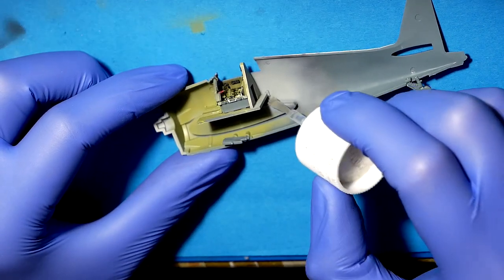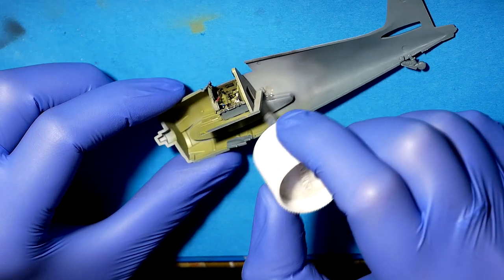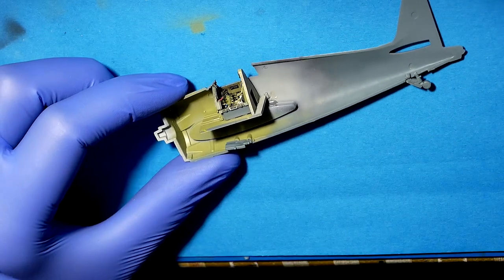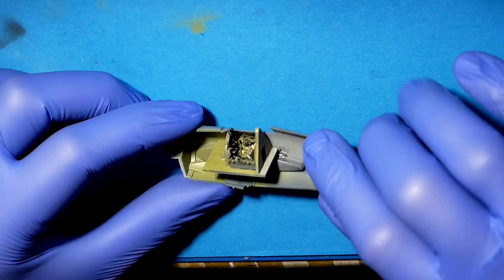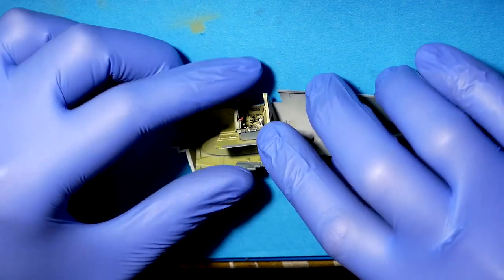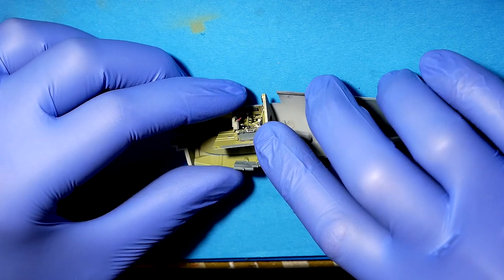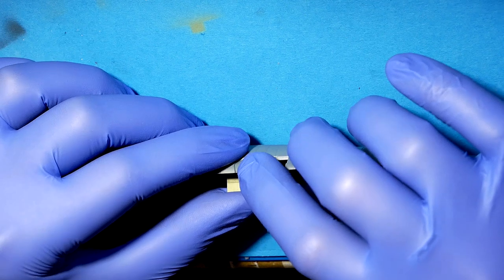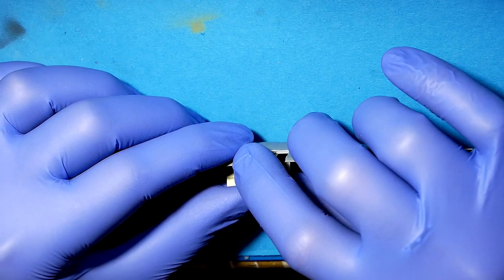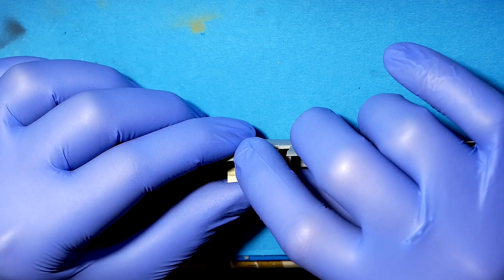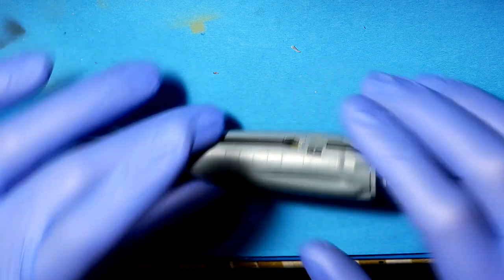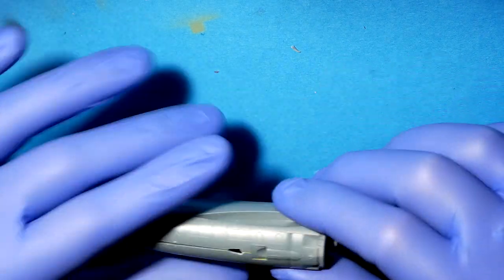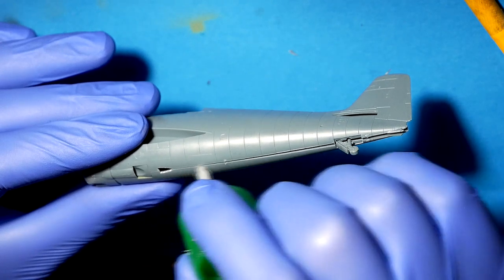Some thick glue for better fitting. Cutting off the hole for the drop tank, for that big fuel tank below the plane.